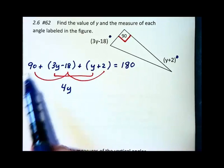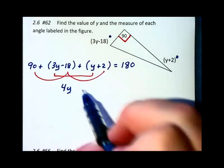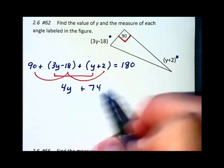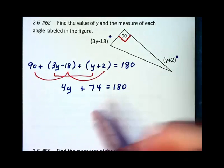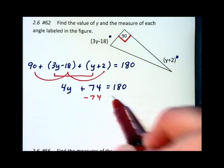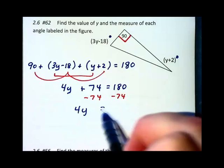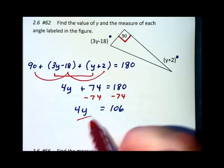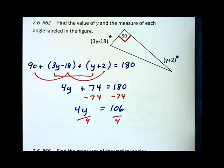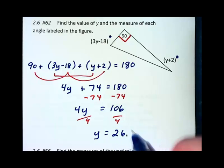And then the constants, 90 take away 18 is 72, plus 2 more makes plus 74, equals the 180. I will then subtract 74 on each side. That gives me 4y equals 106. And dividing by 4 on each side, we will have y equals 26.5.